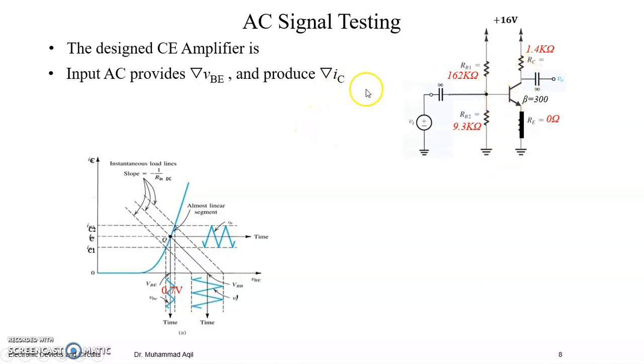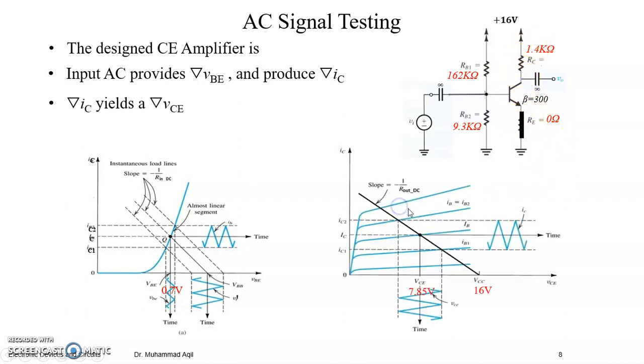So this change in total current is doing what? This current is here, so it means it is changing something here. So RC is constant, so what is basically changing is delta IC yields a change in total collector to emitter voltages. So DC is constant, so what is changing basically is the AC VCE.